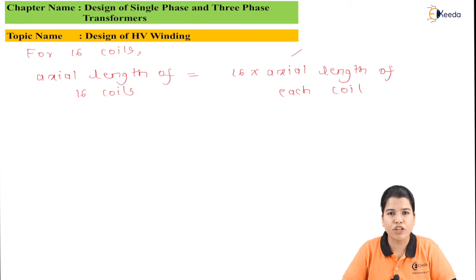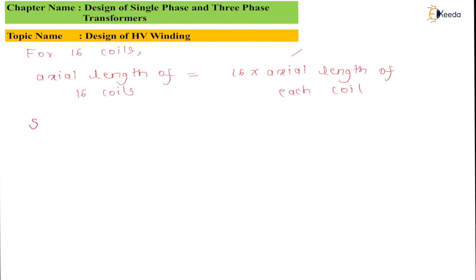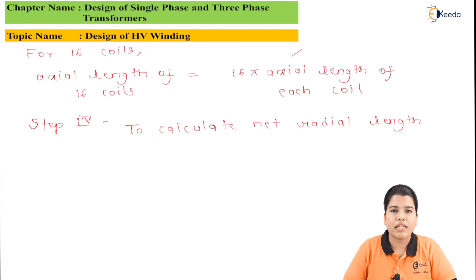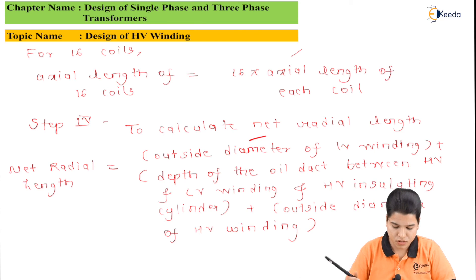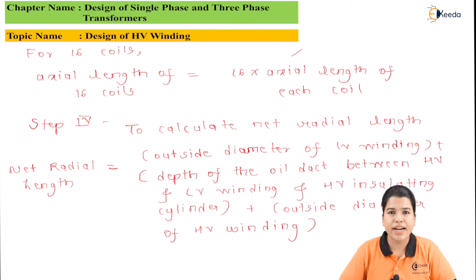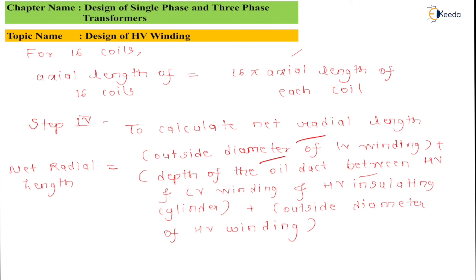The next step is to calculate the net radial length. If we assume an insulation of 30 mm on each side, a total insulation of 60 mm is added. The formula is: net radial length equals the outside diameter of the LV winding, plus the depth of the oil duct between HV and LV, plus the HV insulating cylinder, plus the outside diameter of the HV winding. By following all these steps we can design the HV winding of the transformer.